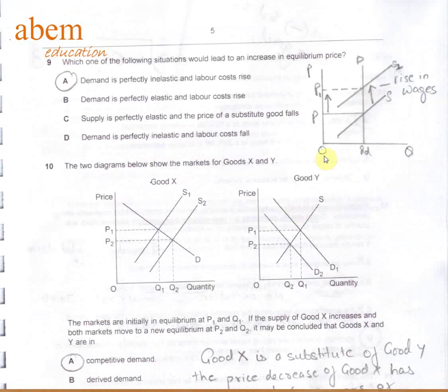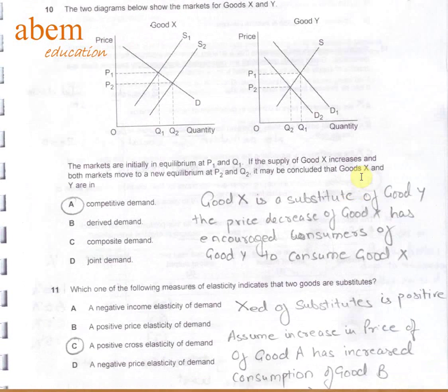In question number 10, good Y and good X are substitutes of each other. We can see the price of good X falls down from P1 to P2, and the demand for good Y decreases from D1 to D2. Why? Because the moment the price falls down, the demand for good X increases from Q1 to Q2. So it is a competitive demand.